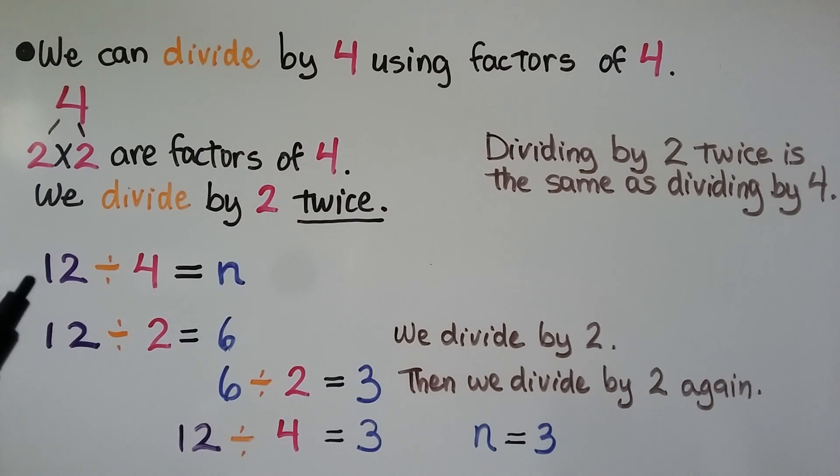We have n as a variable. So we do 12 divided by 2, which is equal to 6. Then we divide by 2 again using the 6. 6 divided by 2 is equal to 3. That means 12 divided by 4 is equal to 3. We know n is equal to 3. That's our quotient.